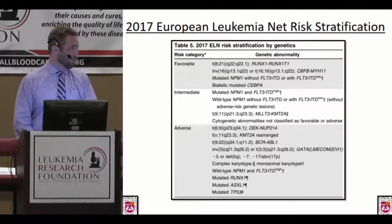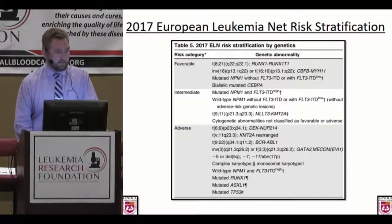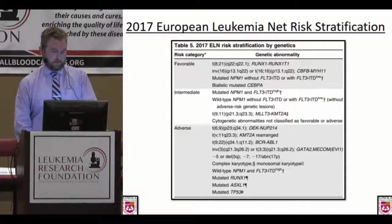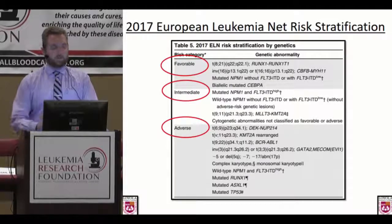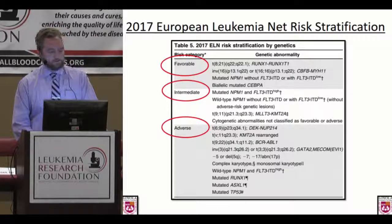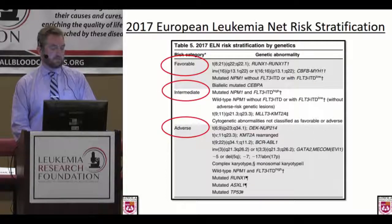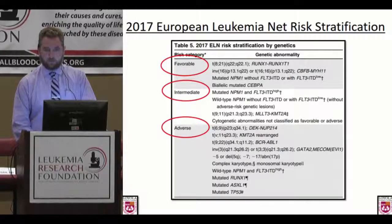Many groups have used information from thousands of patients over decades to risk stratify patients. This is the most recently updated risk stratification from the European Leukemia Net — one that's pretty well accepted, though there are others from the Hovon group, SWOG, and other cooperative groups with similar stratifications. This allows us to utilize a wealth of information listed here to try to group people into individual categories that help make treatment decisions. In the European Leukemia Net this comes out to three groups: favorable, intermediate, and adverse.